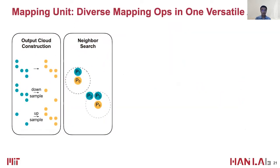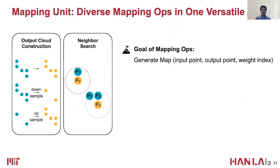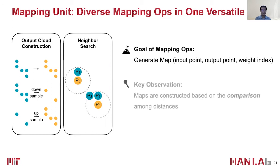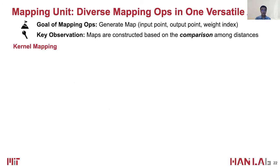We first look at the mapping units. Note that the ultimate goal of mapping operations is to generate input point, output point, and weight index maps. We found that no matter which algorithm is used, these maps are always constructed based on the comparison among distances. Take kernel mapping as an example. The comparison here is not-greater-than.